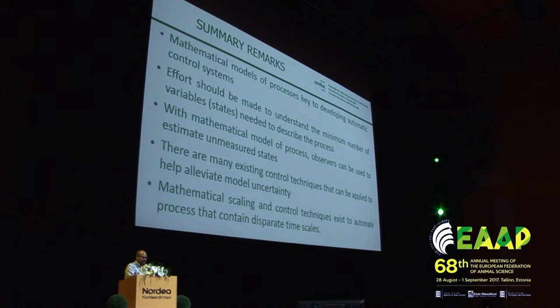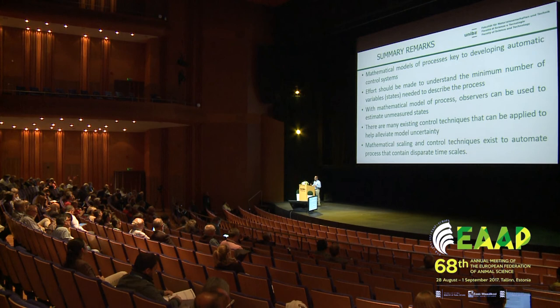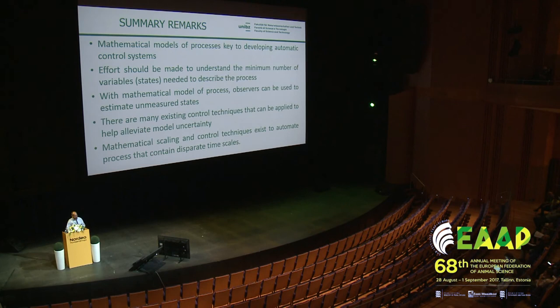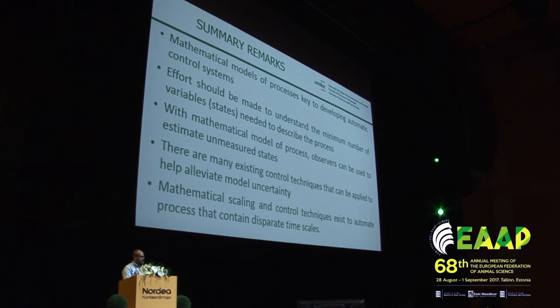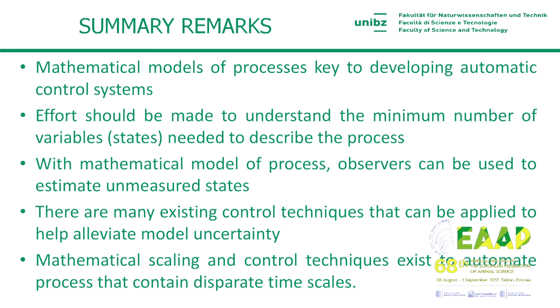To conclude: based on my experience in field robotics, what could help precision livestock farming is the development of mathematical models, because they are key to using the information you're collecting and feeding it back into the process. One thing that should be done with all this data is to understand what you really need to measure — the minimum number of states needed to describe the process — rather than measuring everything. Lastly, there are quite a few mathematical scaling and control techniques that already exist and could help automate systems, especially ones with disparate time scales like those encountered in precision livestock farming.